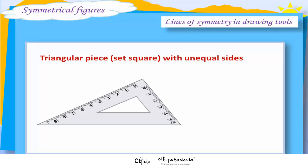Triangular piece Set Square with unequal sides. Number of lines of symmetry is 0.